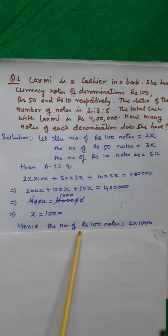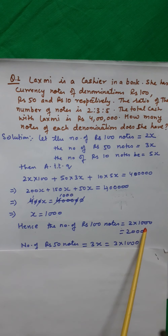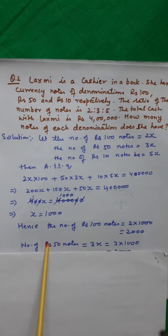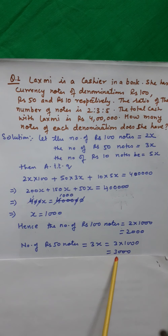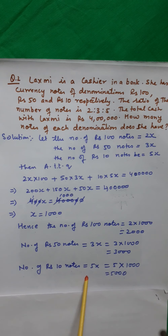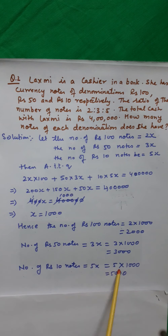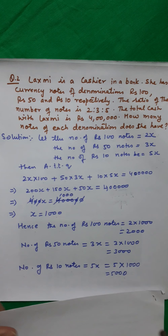Hence, the number of 100-rupee notes will be 2 × 1000, that is 2000. Number of 50-rupee notes will be 3x, that is 3 × 1000, equal to 3000. And number of 10-rupee notes will be 5x, that is 5 × 1000, which is equal to 5000.